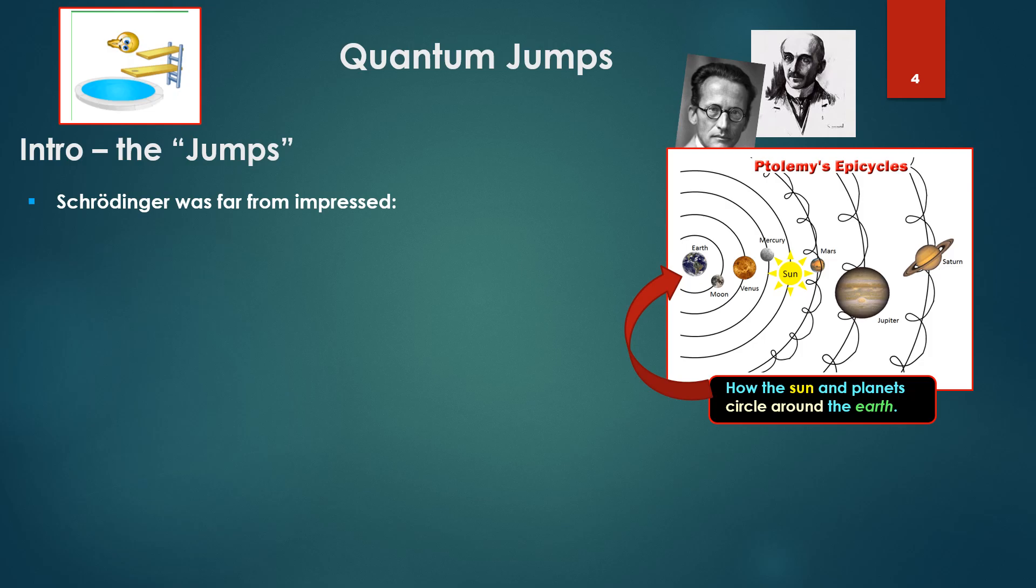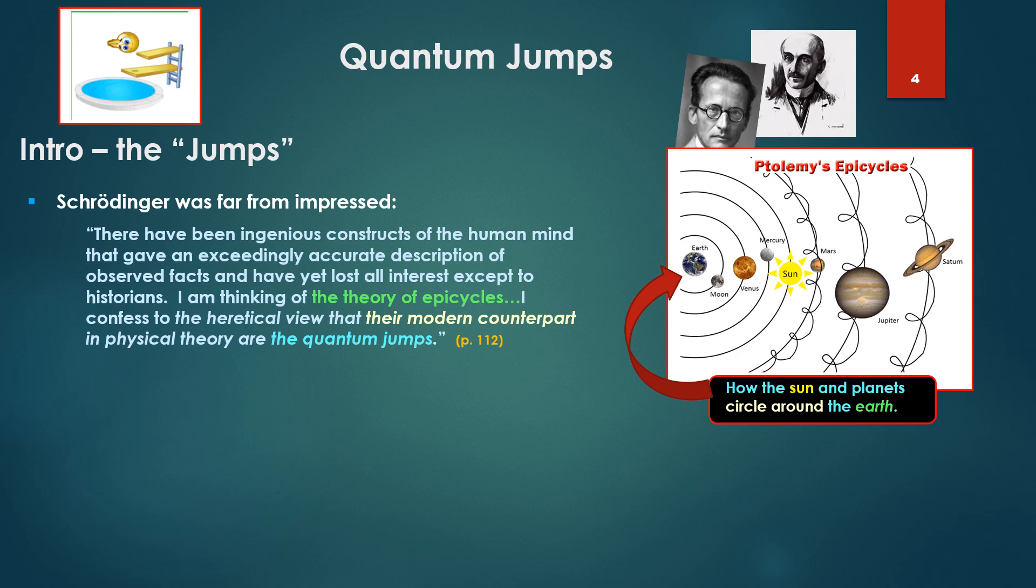Schrödinger was far from impressed. There have been ingenious constructs of the human mind that give or gave an exceedingly accurate description of observed facts and have yet lost all interest except to historians. I am thinking of the theory of epicycles. I confess to the view that their modern counterpart in physical theory are quantum jumps. As far as Schrödinger is concerned, epicycles rotating around the earth are not much worse than quantum jumps.